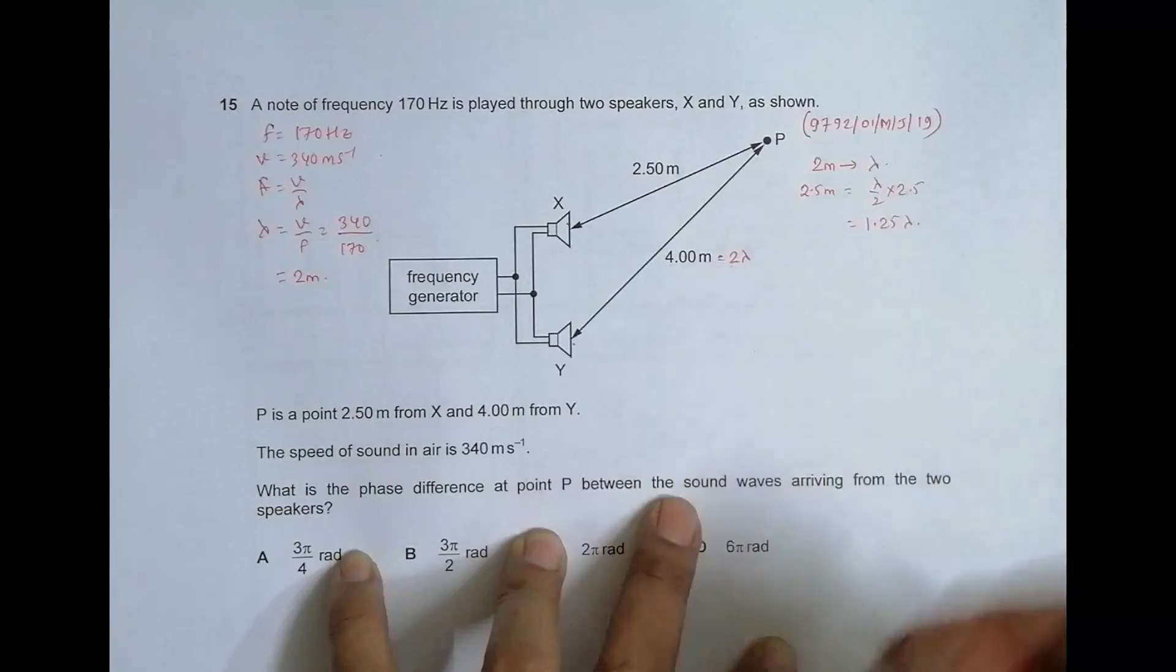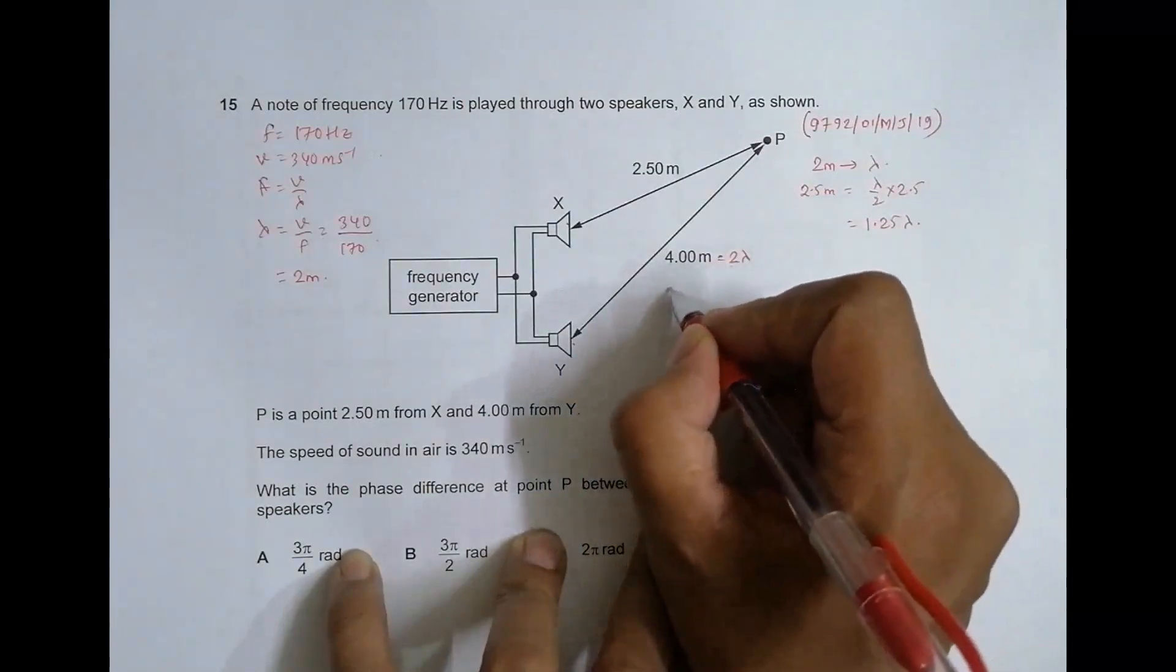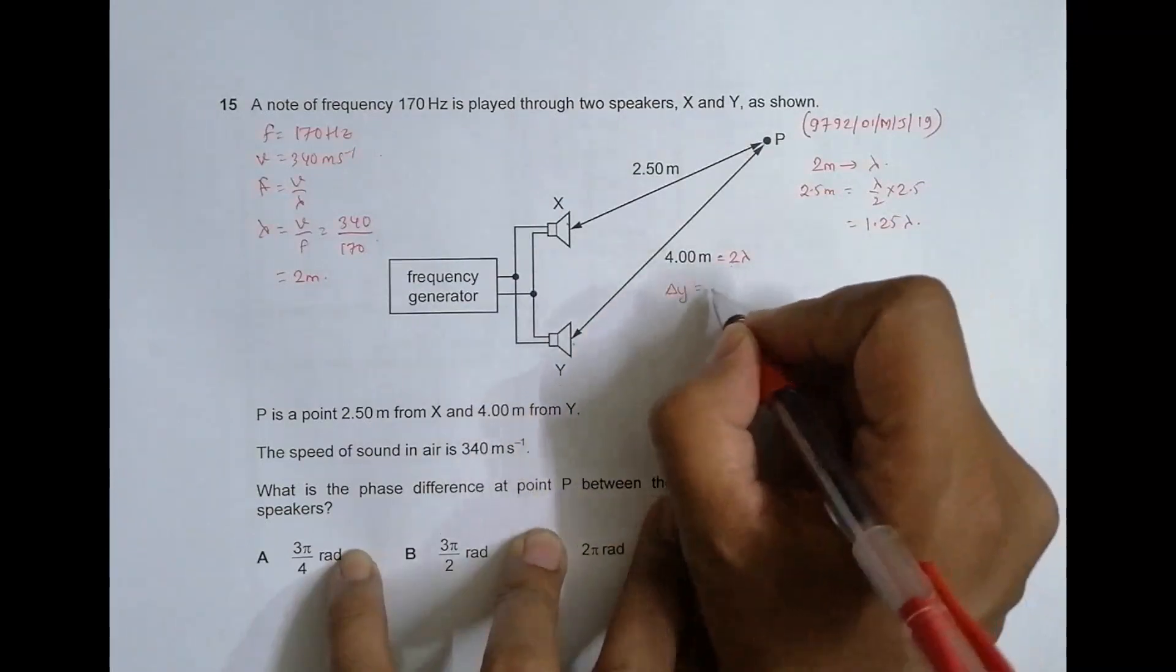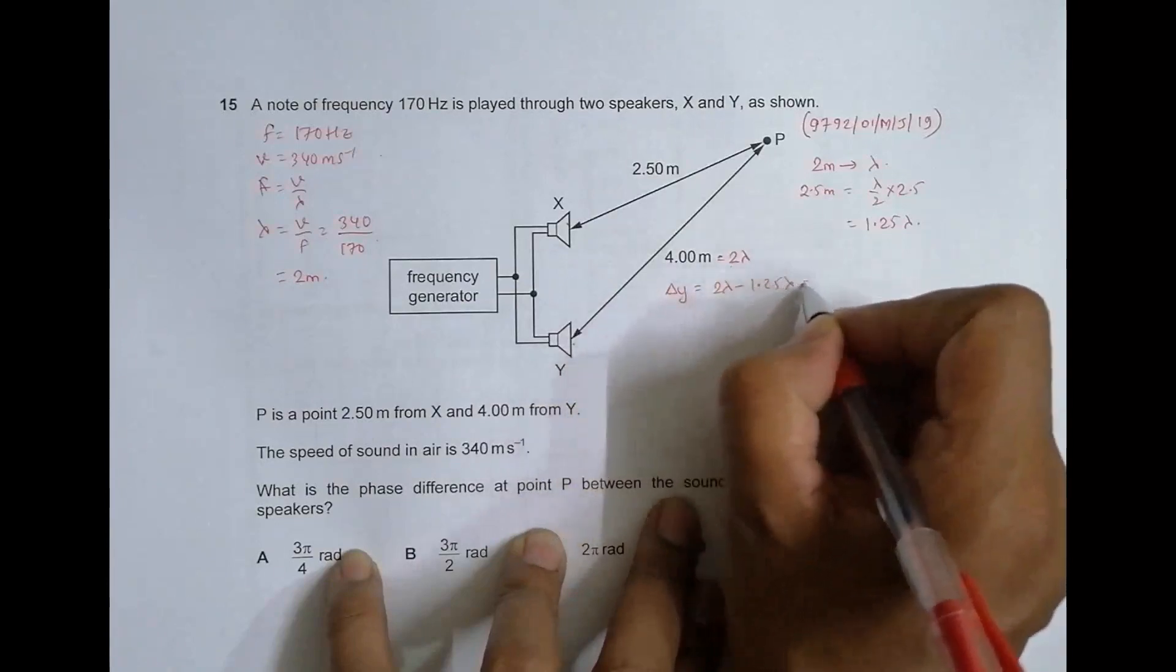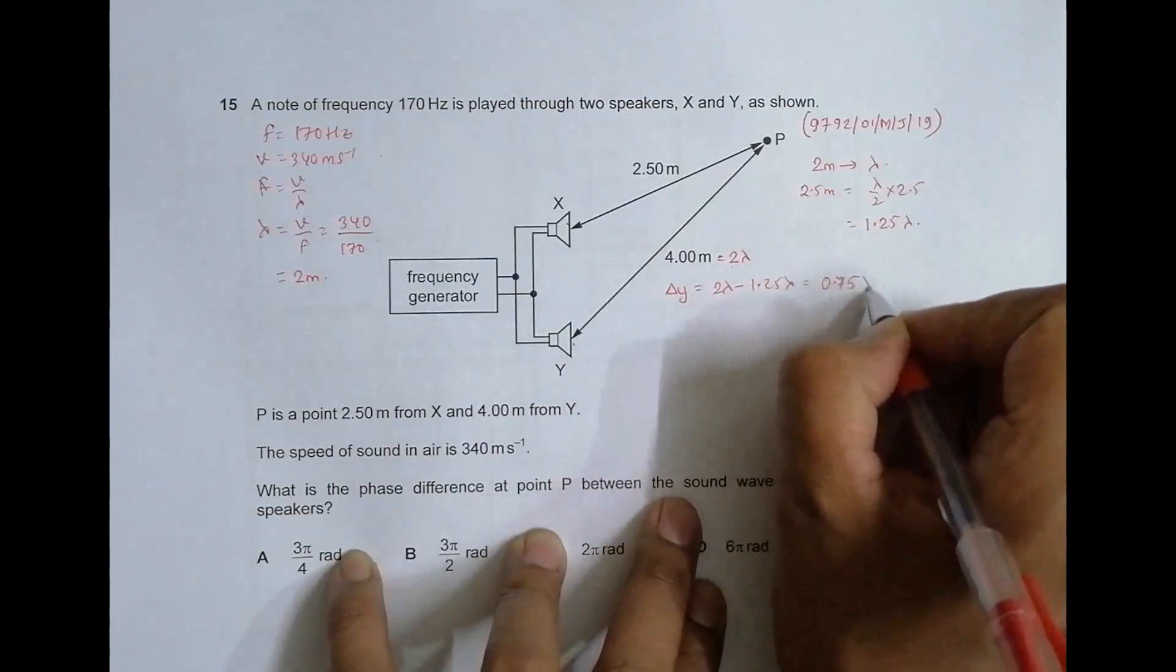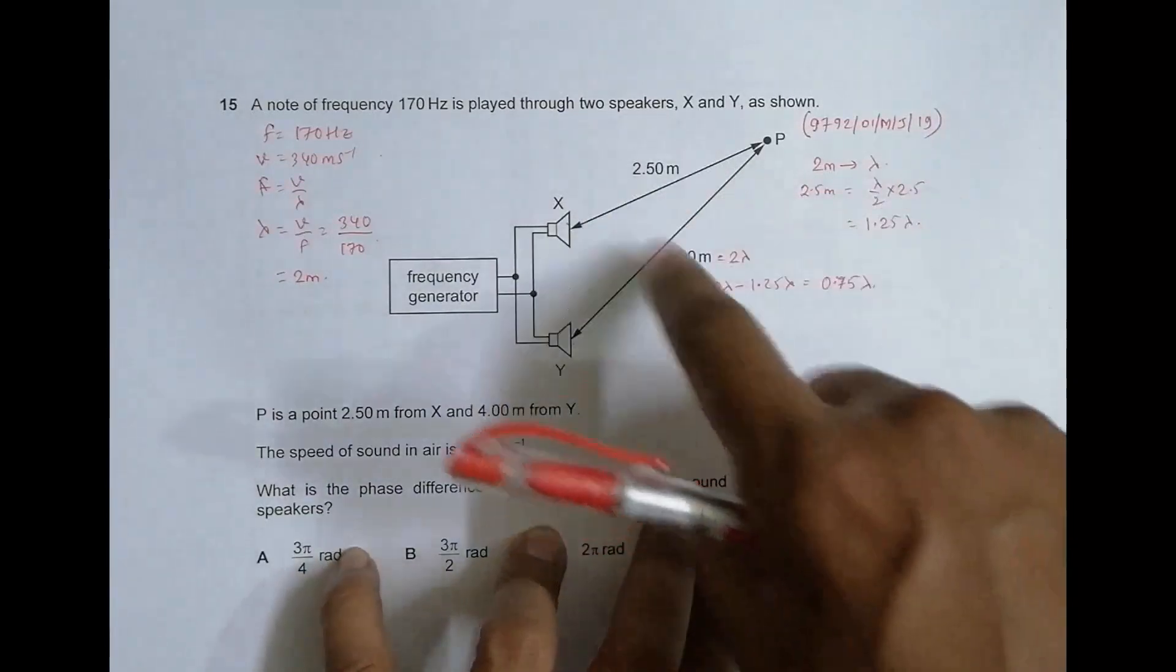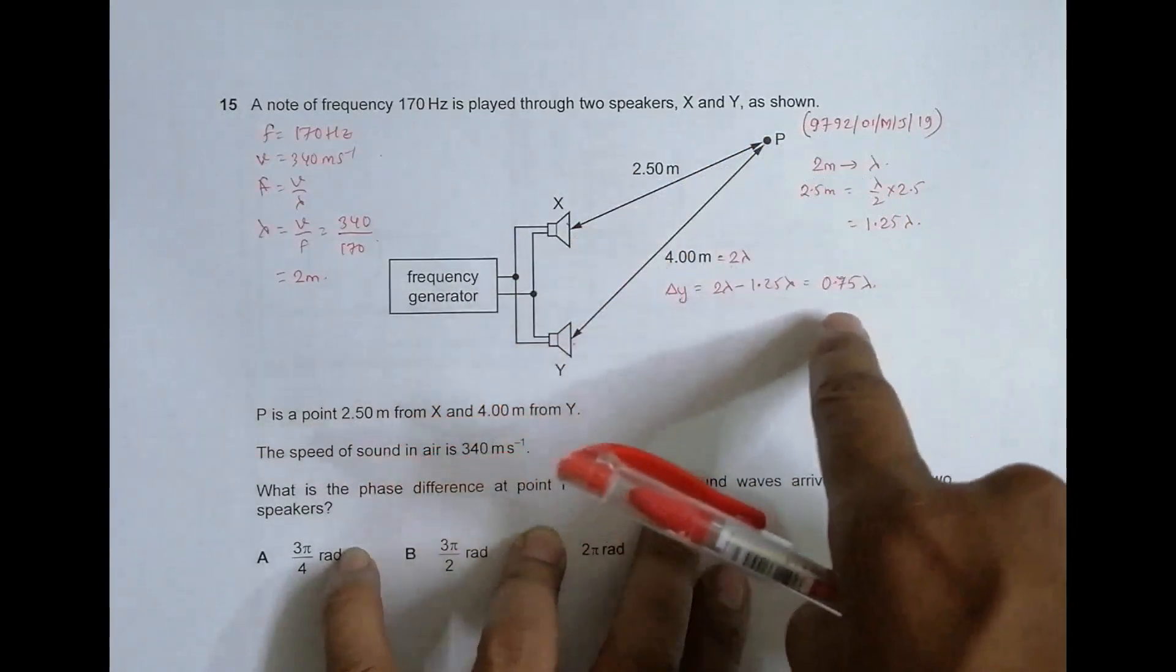The path difference, delta y, is equal to 2 lambda minus 1.25 lambda, which equals 0.75 lambda. So the distance difference between the waves arriving from here and here will be equal to 0.75 of lambda.